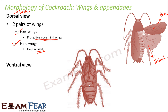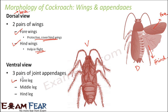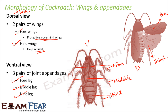From the ventral view — that is, from the lower side of the cockroach — you can see the legs. There are three pairs of appendages: the fore leg, middle leg, and hind leg, each existing as one pair. All of these legs help the cockroach move from one place to another.